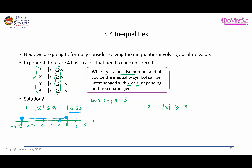To take out the absolute value from |x| ≤ 3, we write plus-minus x less than or equal to 3, meaning positive x ≤ 3 and negative x ≤ 3. The first gives x ≤ 3 directly. The second — negative x ≤ 3 — is equivalent to x ≥ negative 3. So in interval notation, x is between negative 3 and 3, which matches what we saw in the graph.